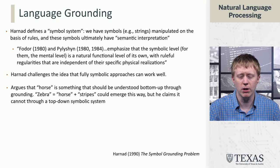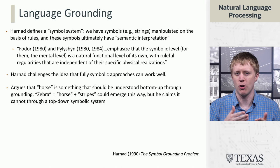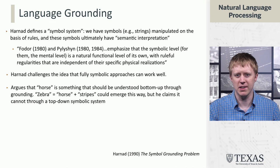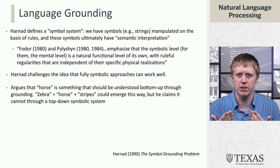One of the thought experiments Harnad gives involves a horse. The way he thinks about a zebra is that it's a horse with stripes. You could express this symbolically, but a system that just knows about zebras and horses isn't necessarily going to understand all those properties. Whereas, because we grow up perceiving these things and having a deeper grounded understanding of what these concepts are, we can look at a zebra and say that looks like a horse with stripes.